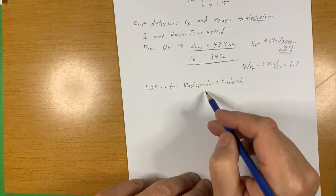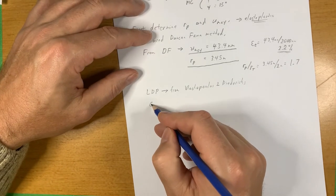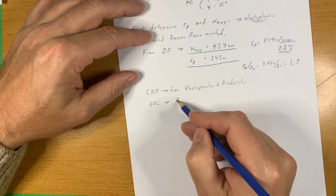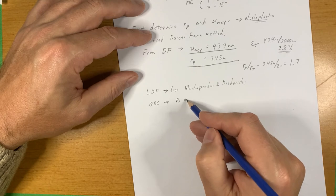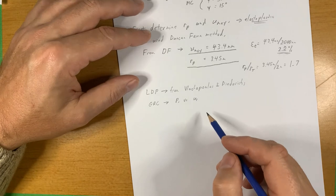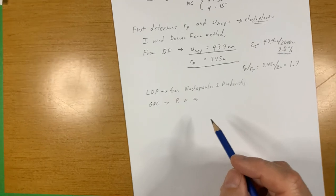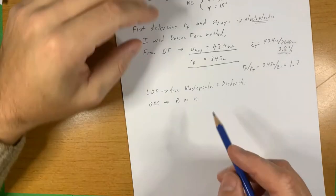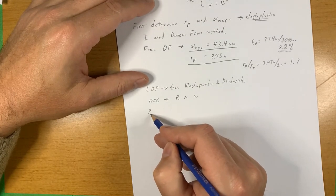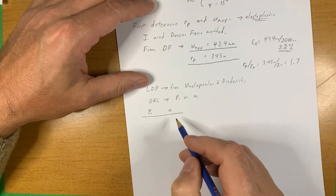The ground reaction curve is essentially a plot of the internal pressure versus the boundary displacement. You can get that from numerical models or analytical solutions that consider P_i. So again, I used Duncan-Fama and I'm just going to show you the results in this table here.